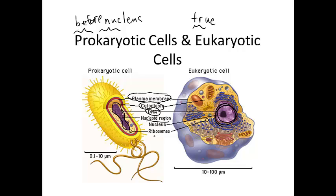You'll also see both cell types have ribosomes for making proteins. One small difference is the ribosomes are larger in eukaryotic cells. Also notice the size of the cells — prokaryotes are smaller, and they only go up to about 10 micrometers.